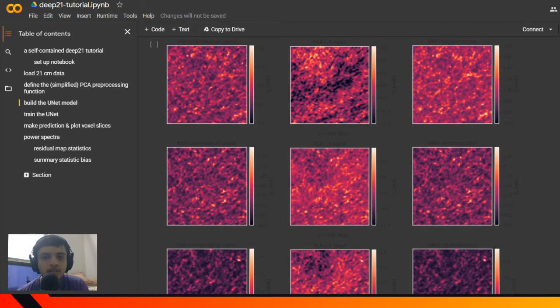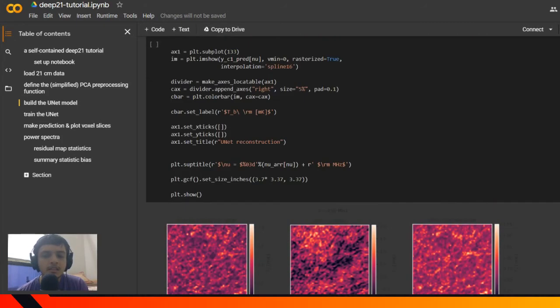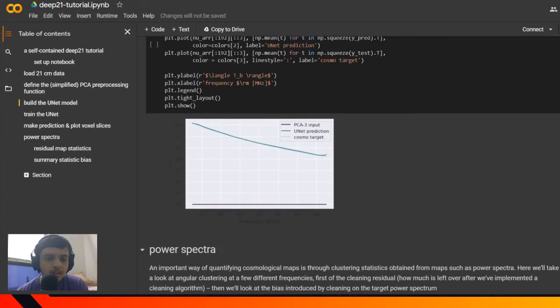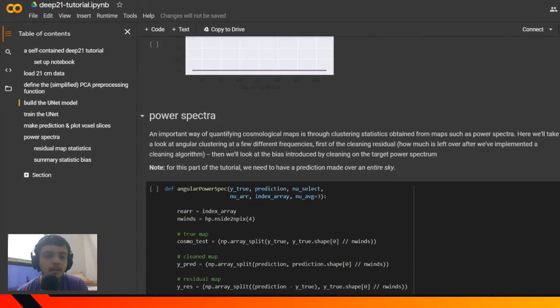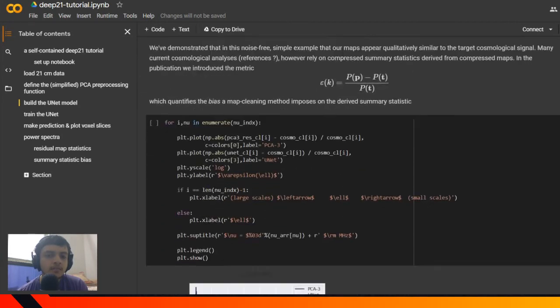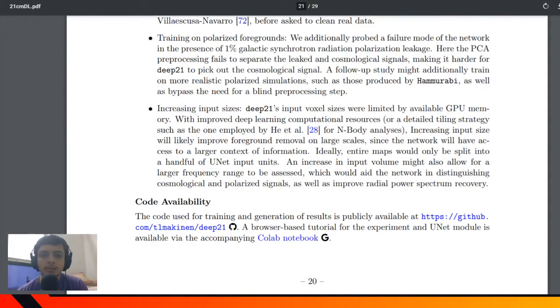This is the output that they have with PCA input and then U-Net reconstruction. As you can see, U-Net does a decent job of reconstructing the cosmological signal, which is what they're inferring. This is a Colab notebook - even you can download it on your own local system and run it to reproduce the result.